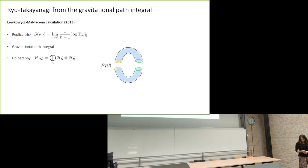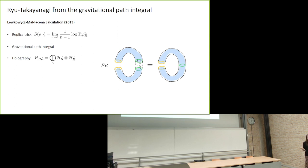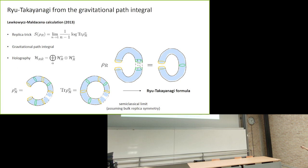The Ryu-Takayanagi formula has been derived from the bulk perspective — from the bulk gravitational path integral — by Lewkowycz and Maldacena. An important ingredient is the replica trick: we obtain the von Neumann entropy as a limit of a sequence of Rényi entropies. Crucially, given the form of the Hilbert space, there is a precise sense in which we can associate a state for region R through the gravitational path integral. In the classical limit, assuming the bulk saddle preserves the replica symmetry, we get the Ryu-Takayanagi formula.